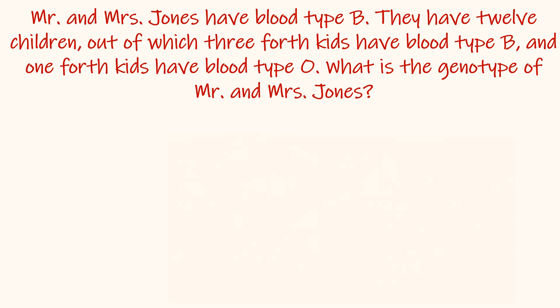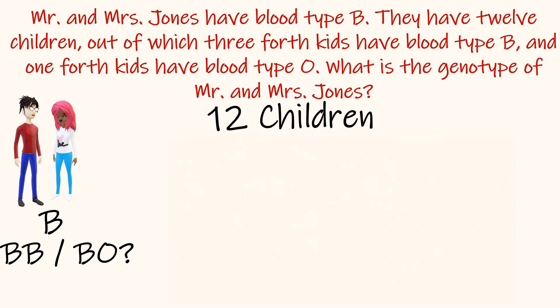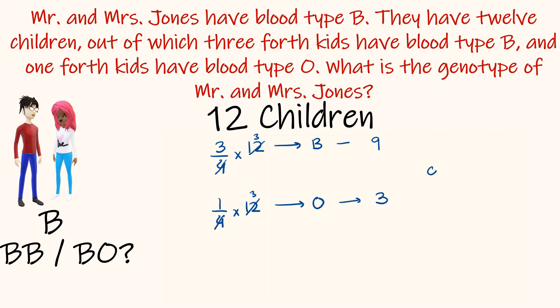Mr. and Mrs. Jones both have blood type B. They have 12 children: three-fourths have blood type B and one-fourth have blood type O. Three-fourths of 12 is 9 children with type B, and one-fourth is 3 children with type O — giving a 9:3 ratio, equivalent to a 3:1 ratio of blood type B to blood type O. Their genotype can be either homozygous BB or heterozygous BO.